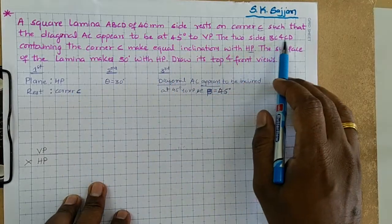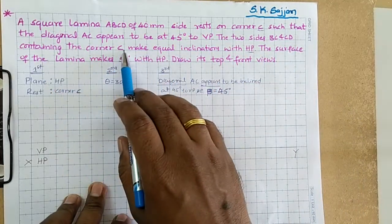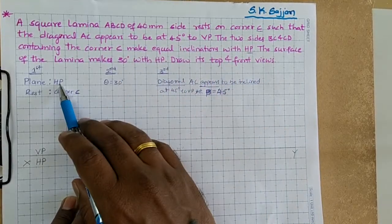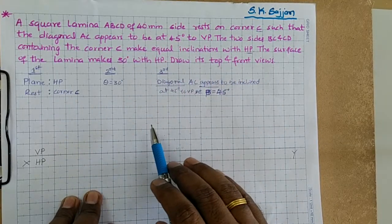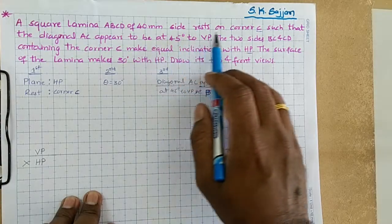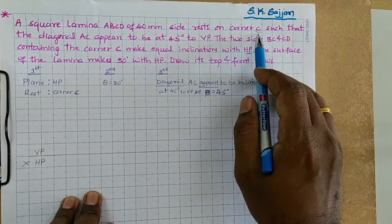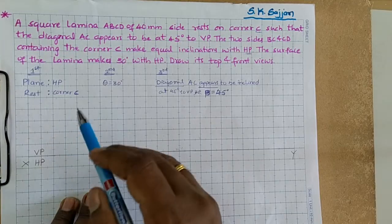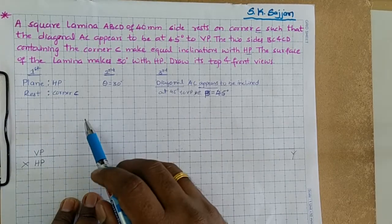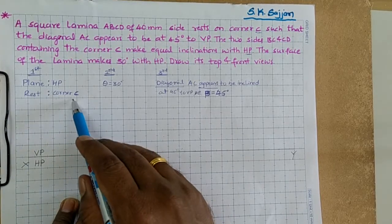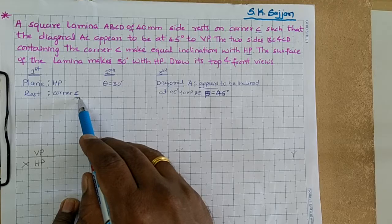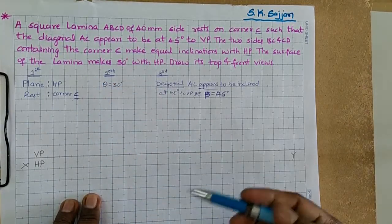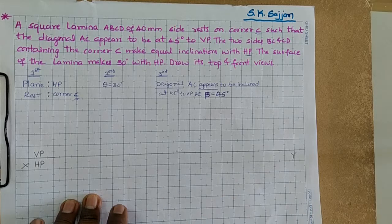The two sides BC and CD containing corner C make equal inclinations with HP. How does it rest on HP? It is given: rest on corner C. Particularly, the name of the corner is given, that is C. It is resting on corner C. With the help of these two details, we can easily draw the first portion.